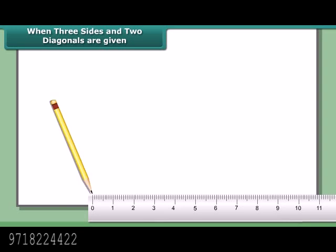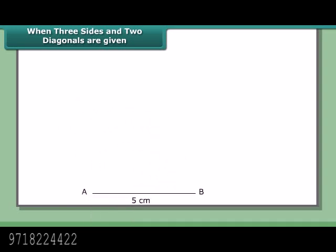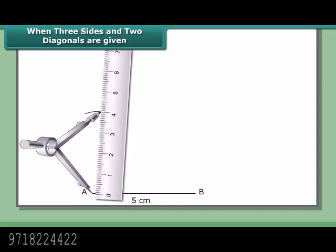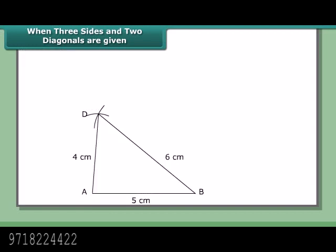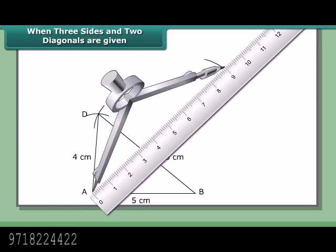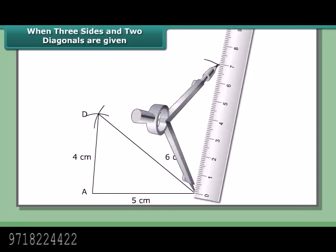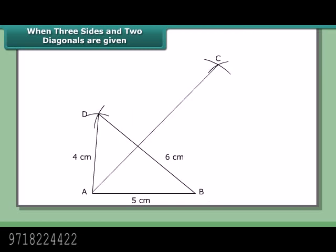Steps: Draw AB = 5 cm. With A and B as centers and radii 4 cm and 6 cm respectively, draw arcs to cut each other at point D. Join AD and BD. With A and B as centers and radii 9 cm and 7 cm respectively, draw arcs to cut each other at C. Join AC and BC. Join DC. ABCD is the required quadrilateral.